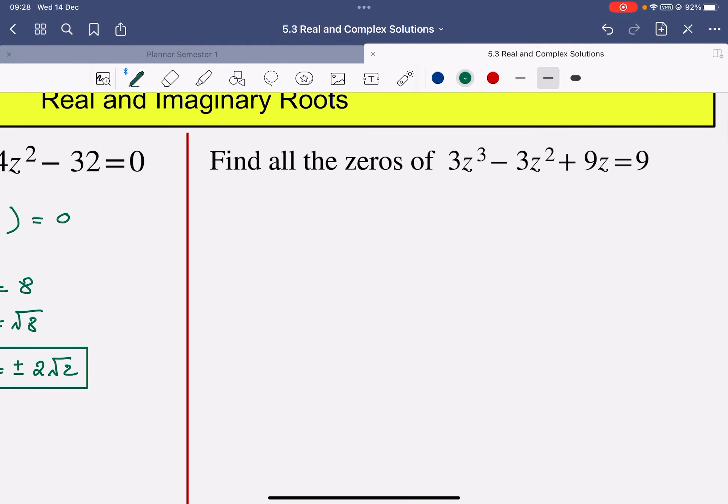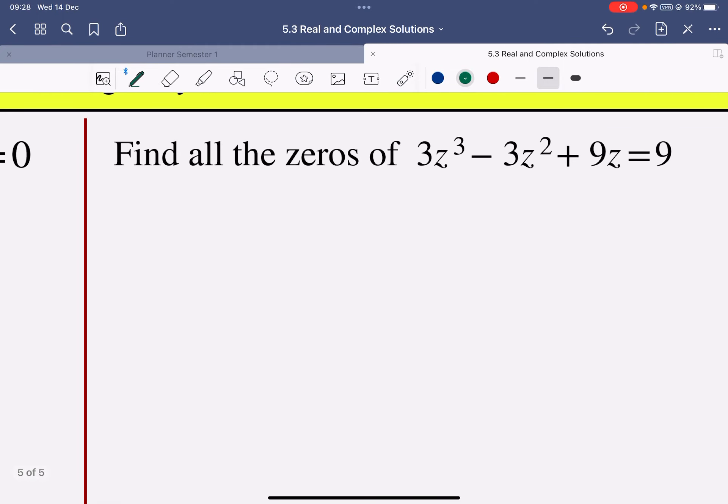Find all the zeros of this particular equation. So I'm going to copy it out again and make it equal to 0. But what I can already see is that I can divide everything by 3. So that's probably going to keep it much neater for me when I come to factorize.